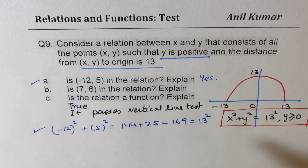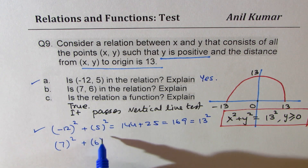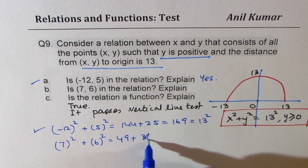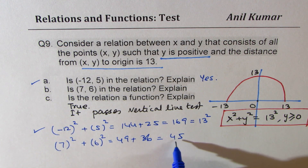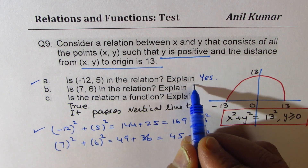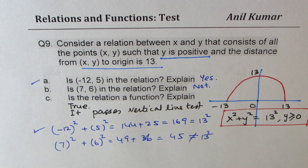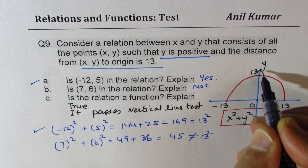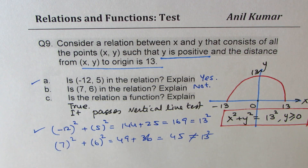For part C: is the relation a function? Since y ≥ 0, we have the upper semicircle. A vertical line only intersects it at one point, so yes, the relation is a function.